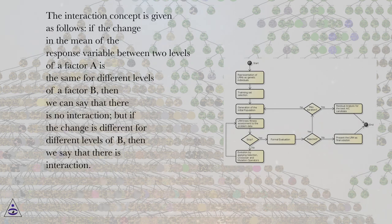The interaction concept is given as follows: if the change in the mean of the response variable between two levels of a factor A is the same for different levels of a factor B, then we can say that there is no interaction, but if the change is different for different levels of B, then we say that there is interaction.